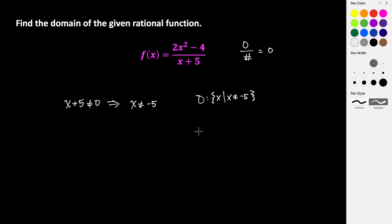This is the set notation. Or in interval notation, it would be from negative infinity up to negative 5, union from negative 5 to positive infinity — basically everything except for negative 5.